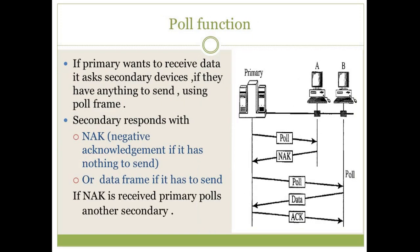Now there is a poll function. The poll function is used when some other station wants to send data to the primary. Suppose there is one primary station and A and B are two secondary stations. A and B cannot communicate directly; if A wants to send data to B, then A must send the data to primary, and then primary will transmit it to B. All communication takes place via the primary station. When the primary wants to receive data, it asks secondary devices if they have anything to send using the poll frame.